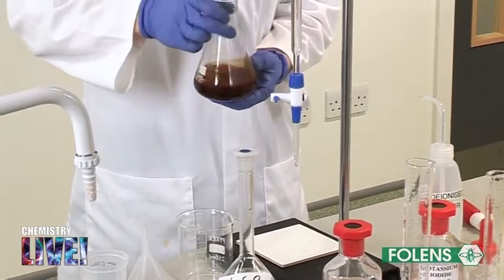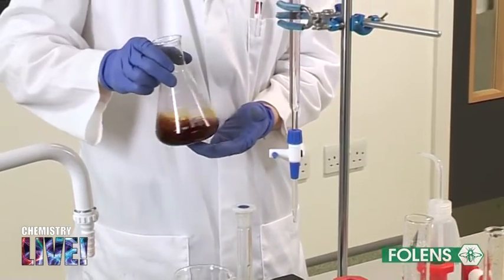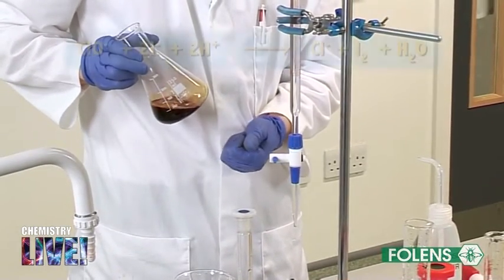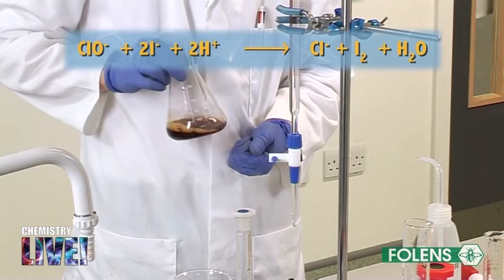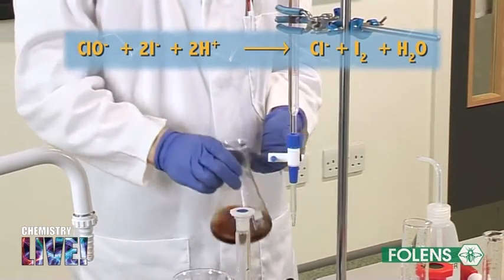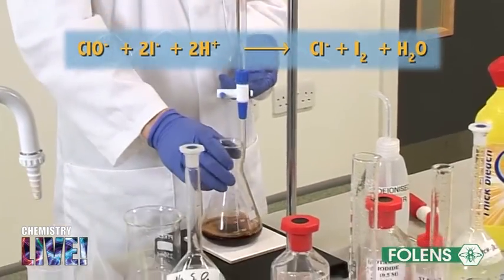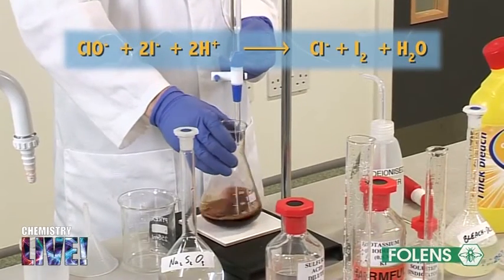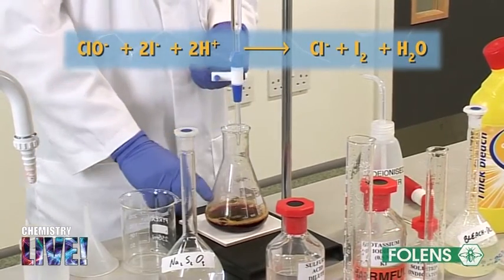Note the reddish-brown color of the iodine formed. The equation for this reaction is shown on the screen. The hypochlorite ion is like potassium permanganate in that it is an oxidizing agent and converts iodide ions to iodine.